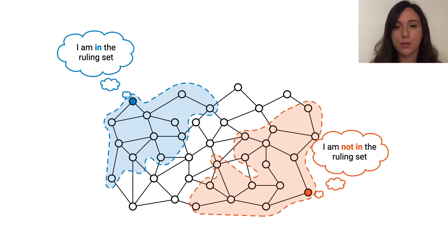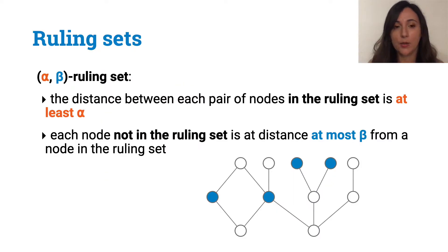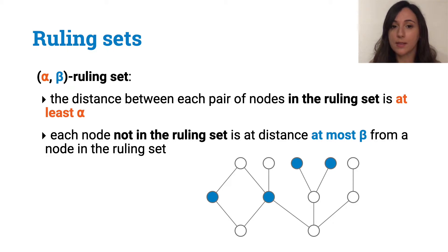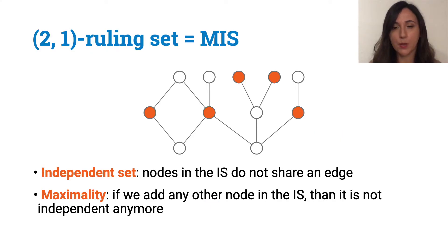And what I mean by locality is how far a node needs to see in order to produce its own part of the solution. If we talk about lower bounds, the question would be how far must a node see, in the worst case, in order to produce its own part of the solution. The goal in the alpha-beta ruling set problem is to select a set of nodes such that the distance between each pair of nodes in the ruling set is at least alpha, and each node that is not in the ruling set is at distance at most beta from a node in the ruling set.